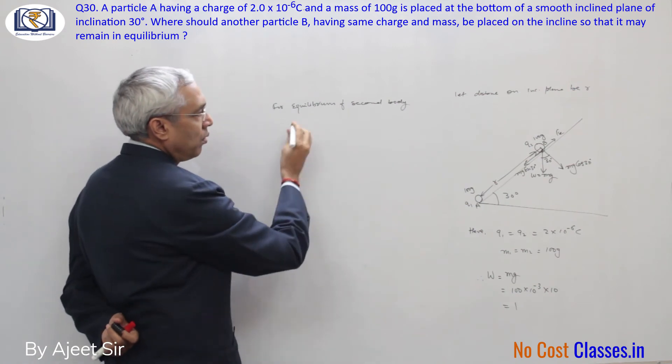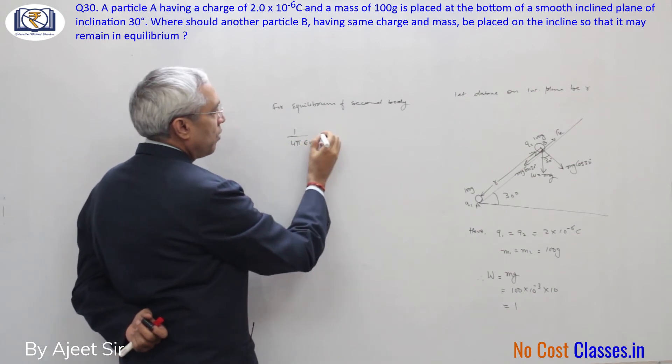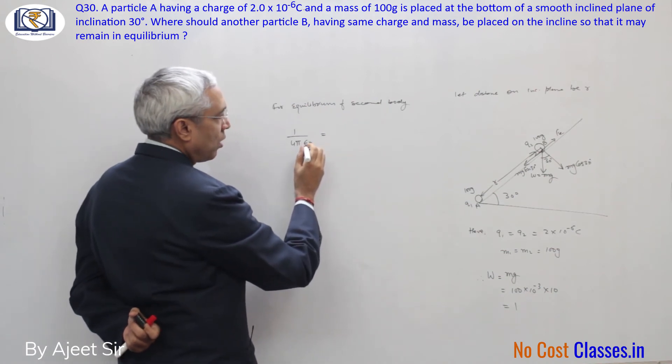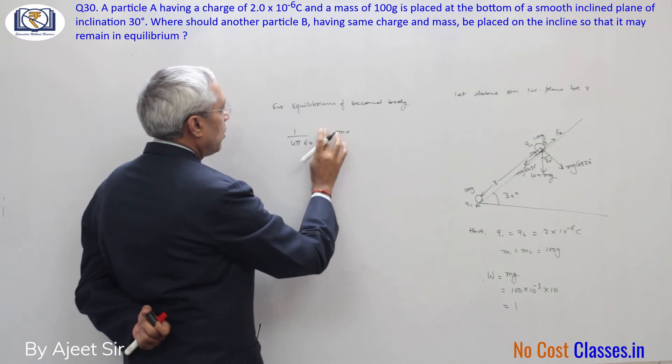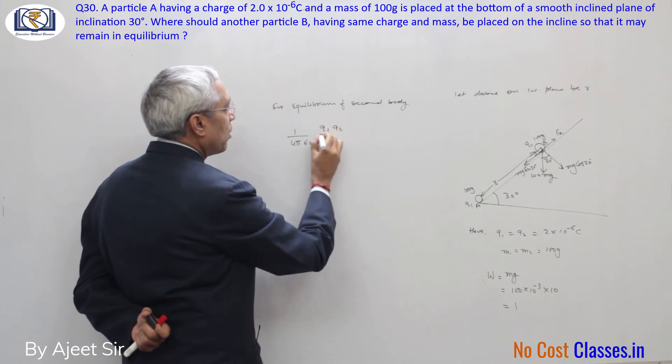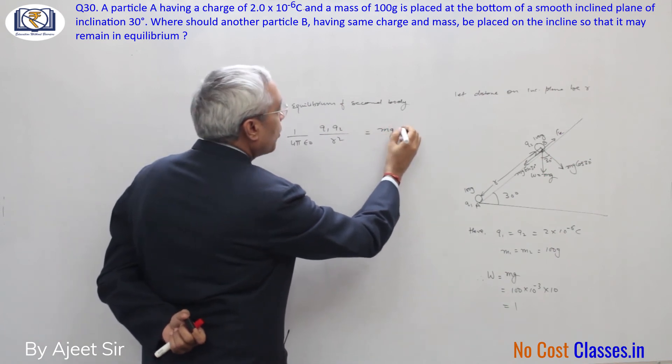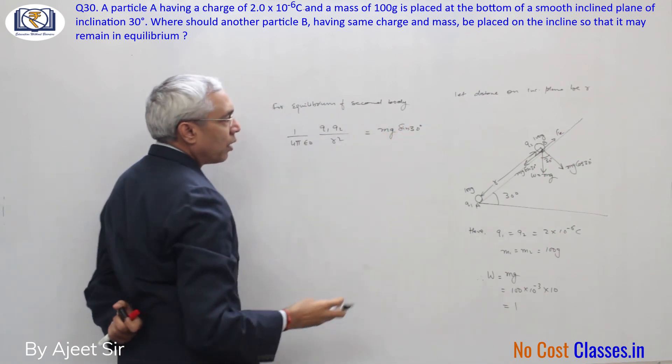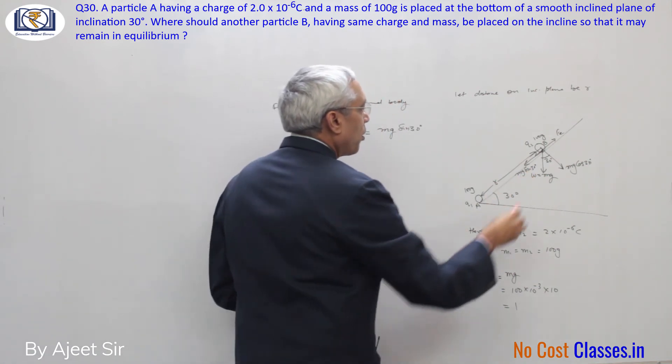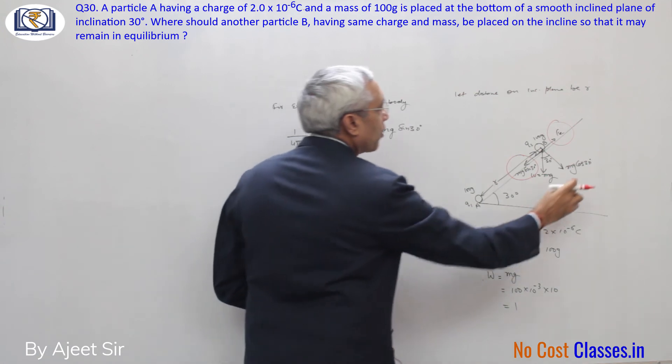For equilibrium of body B, 1 over 4 pi epsilon naught, the electrostatic force Fe, and W which is mg. This is q1 q2 over r square equals mg sin 30. Now see, both these components are equal and opposite, which will counter it.